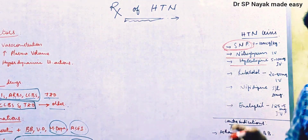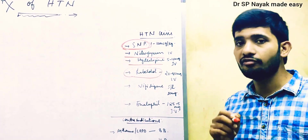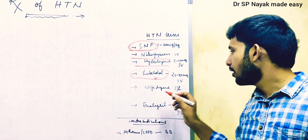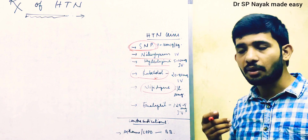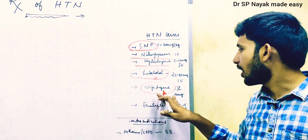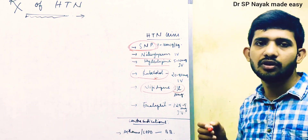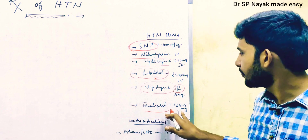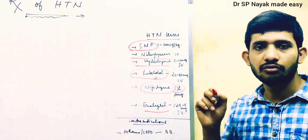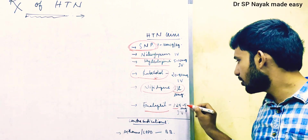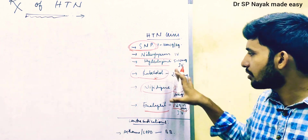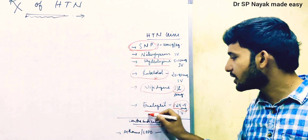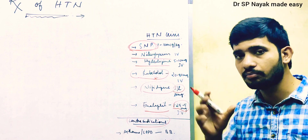Labetalol is a beta blocker formulated primarily for IV use, unlike most other beta blockers which are available in oral form. Nifedipine has a rapid onset of action, short duration, and is formulated as a 10 mg sublingual tablet for hypertensive crisis. Enalapril is a unique ACE inhibitor available in IV form at 1.25–5 mg, also used in hypertensive crisis. These are the rapid-acting IV drugs commonly given in hypertensive crisis.